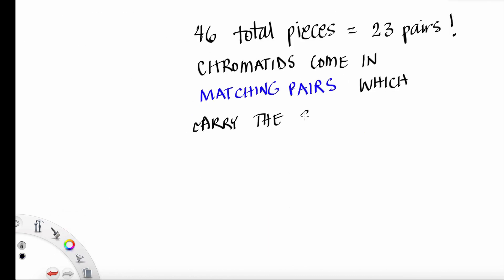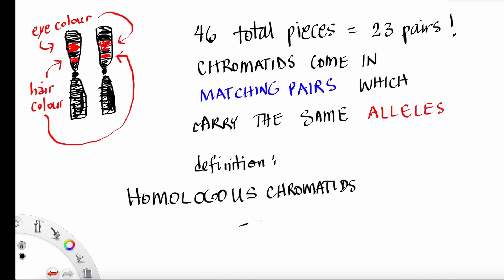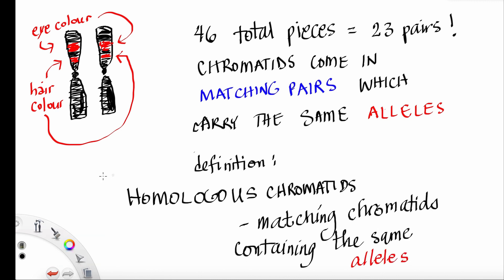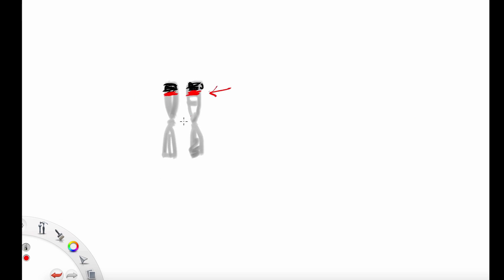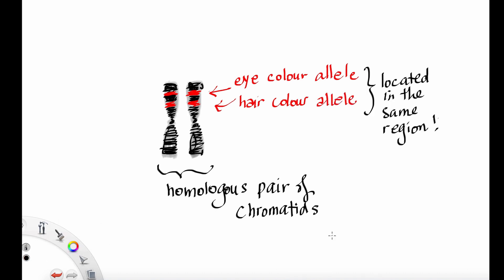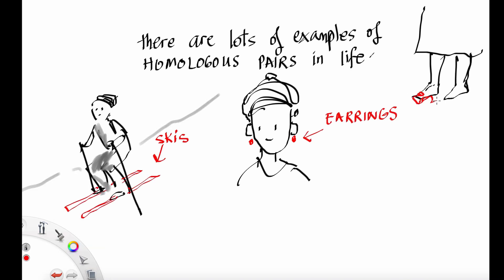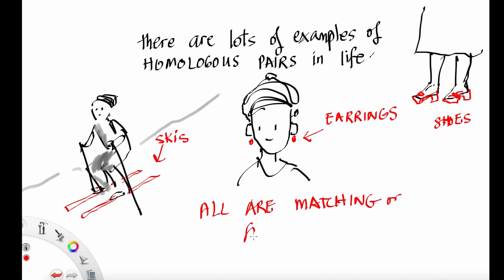The 46 pieces equal 23 pairs. Chromatids come in matching pairs, some of which carry the same alleles. This is the definition of homologous chromatids — matching chromatids carrying the same alleles. Homologous means matching. There are lots of homologous pairs in life: earrings are homologous, skis are homologous, shoes are homologous. Any kind of matching pair is known as a homologous pair.